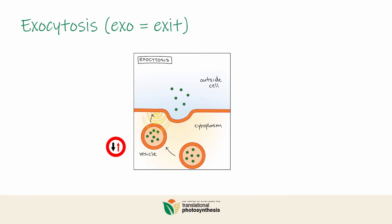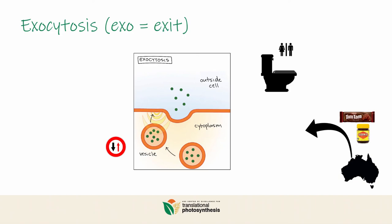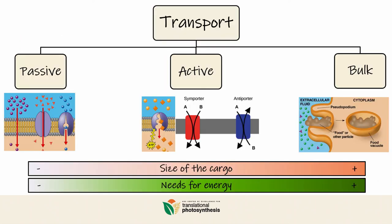Exocytosis is particularly important to get rid of cell waste — it's a bit like when you go to the bathroom. But it also allows the cell to export valuable material freshly made, a bit like when Australia would export Tim Tams or Vegemite to another country. With that, we are finished with our overview of bulk transport, as well as transport in general, including passive and active. I hope you enjoyed it and thanks for watching.